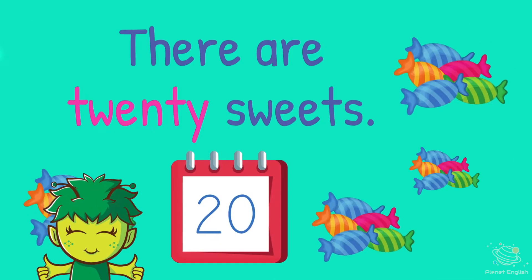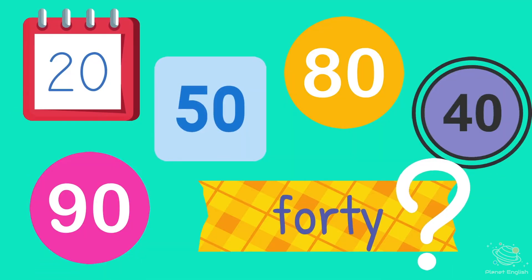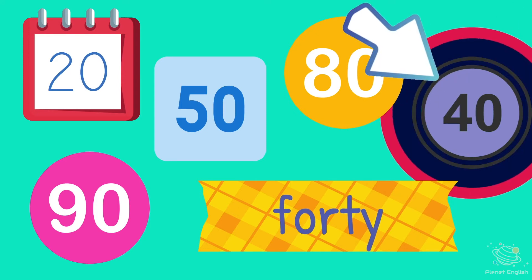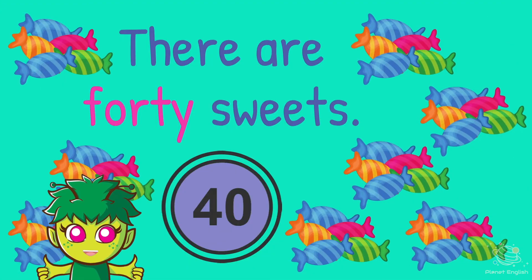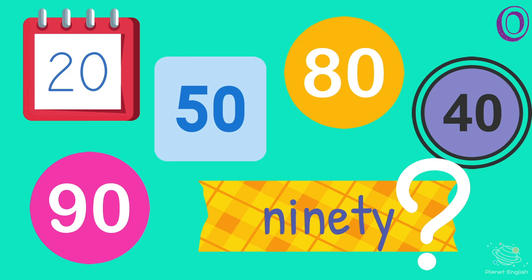There are 20 sweets, which is 40. 5, 4, 3, 2, 1. There are 40 sweets, which is 90. 5, 4, 3, 2, 1.